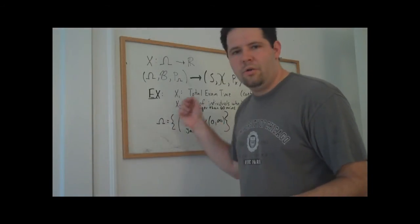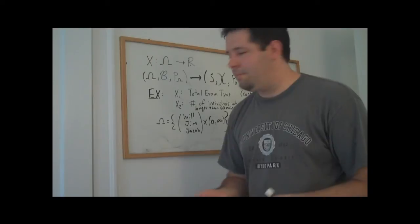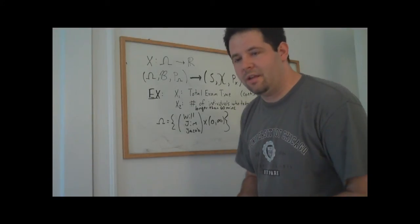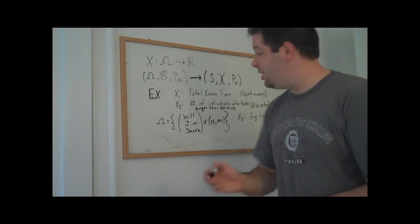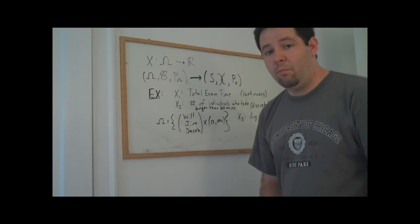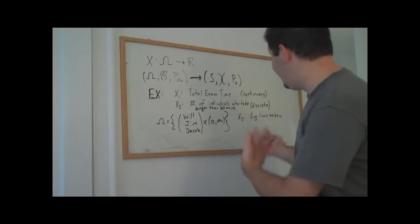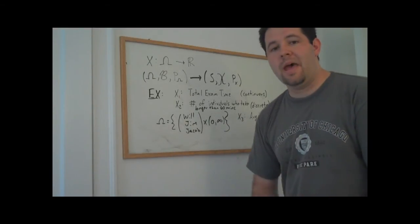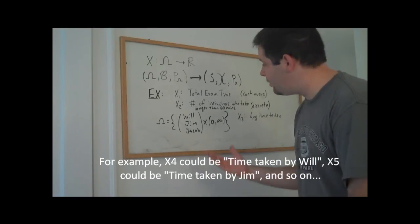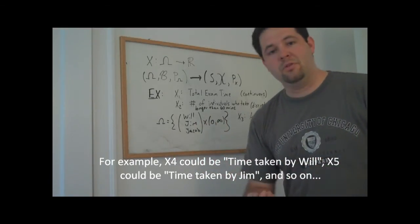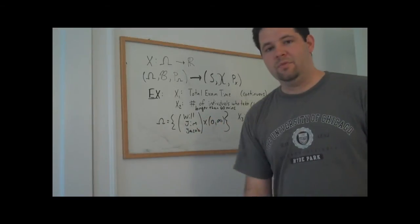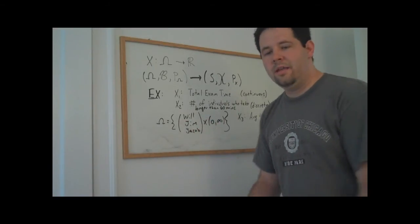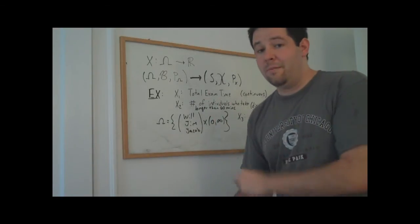And we could define a whole host of other random variables. For example, let's define x3 as the average time taken. So we have three random variables all from the same experiment. We could define a whole bunch of random variables. Let's say we can define k random variables just by imagining different outcomes from this experiment. We could look just at what happens with Will. We could look at just what happens with Jim. What happens with Jacob. We could get a whole bunch of different random variables. They are likely to be related. They may be unrelated.